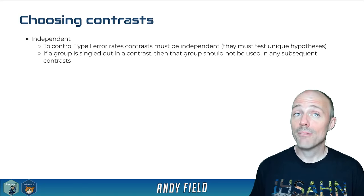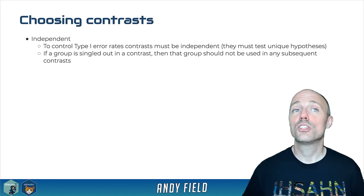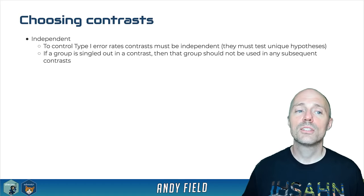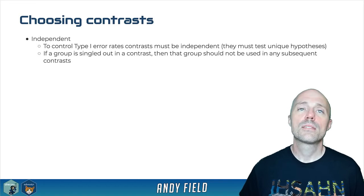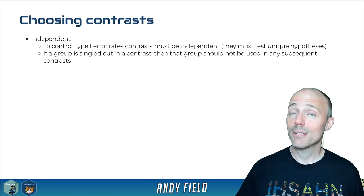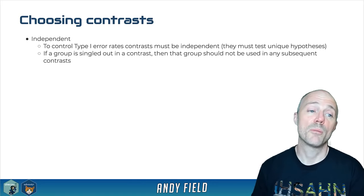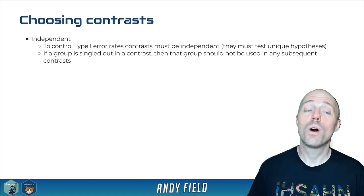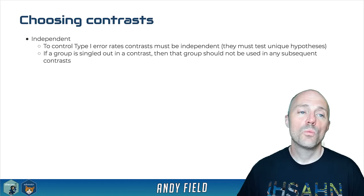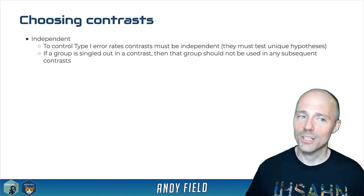With dummy coding, the two dummy predictors are not independent of each other because they share the same control group, meaning their significance tests are related. This means dummy coding does not control the type-one error rate across significance tests. A different approach is to choose contrasts that are independent — where the same group never appears as an individual unit in more than one contrast — which guarantees independence and controls the type-one error rate.